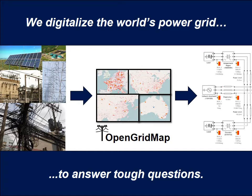So what is OpenGridMap? OpenGridMap is a project of the Chair of Application and Middleware Systems of the Technical University of Munich, and it is a prototypical platform that supports the collection of power grid data. Our goal is to produce simulation models to be used in research.